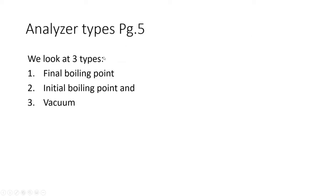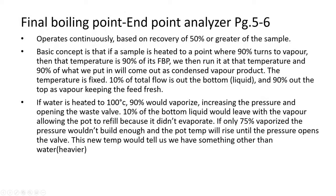Now we'll look at three different analyzer types: Final Boiling Point, Initial Boiling Point, and Vacuum — familiar terms we've already addressed. These analyzers operate continuously. I'll give a fairly detailed write-up on the first one; the second and third are essentially the same with some procedural differences.